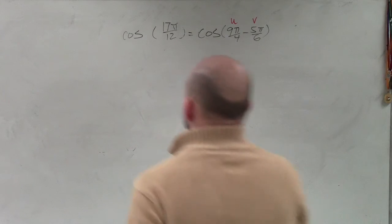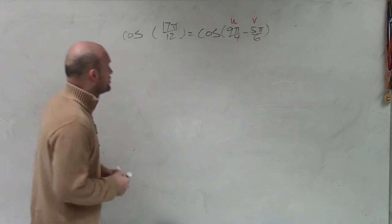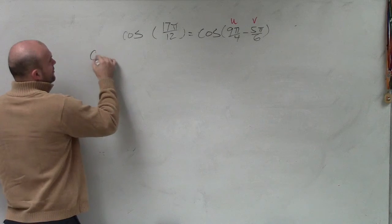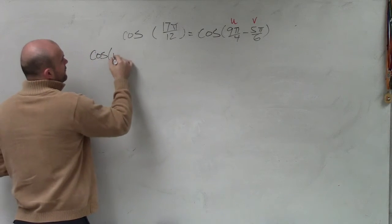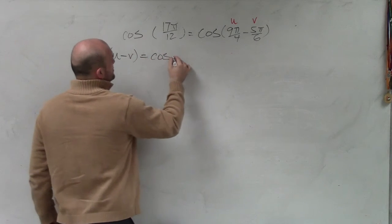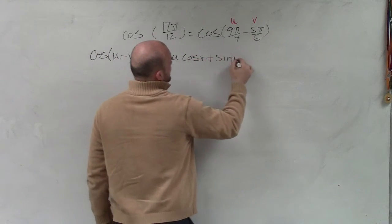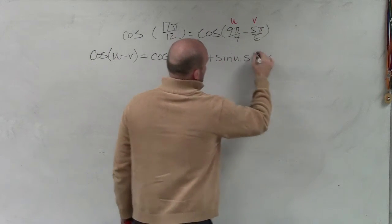I won't go over how to evaluate them. So we're going to use the difference formula. The first thing is, once we have the cosine, we know we have to use our formula, u minus v, which is going to equal the cosine of u times the cosine of v plus the sine of u times the sine of v, correct?